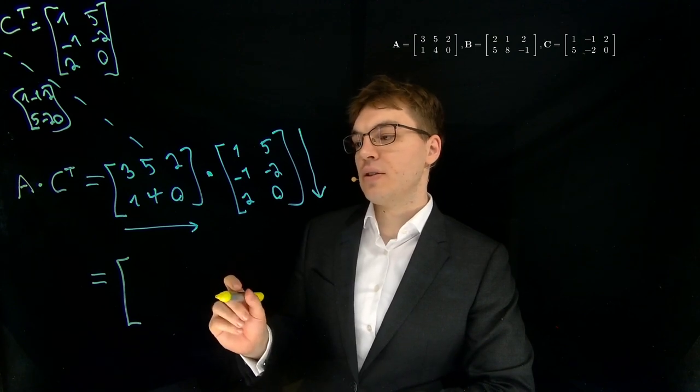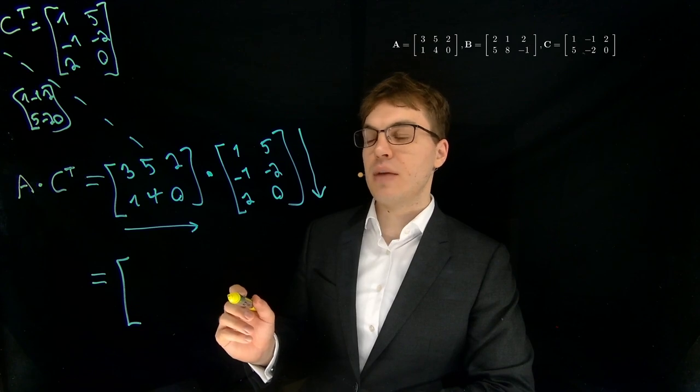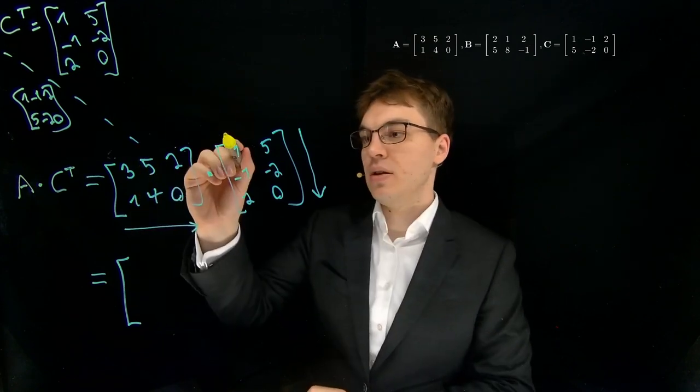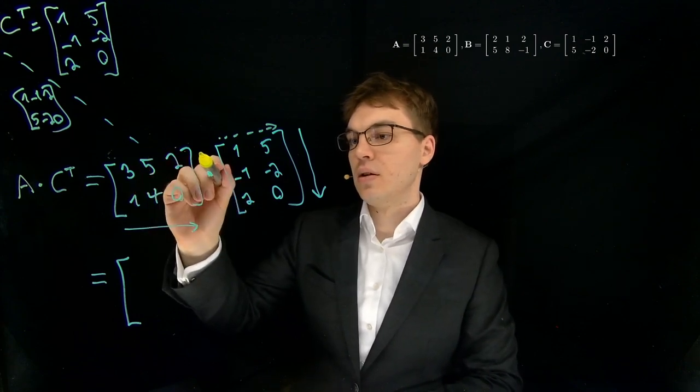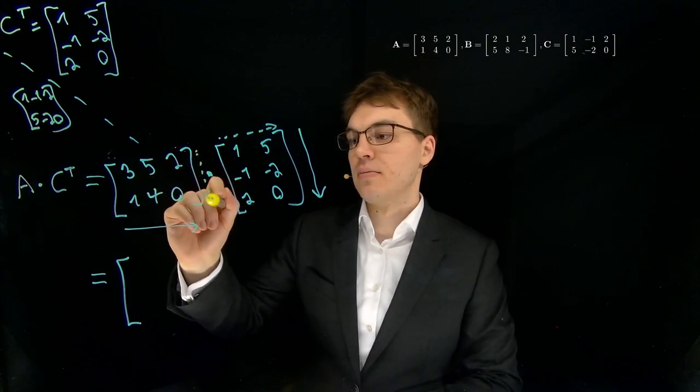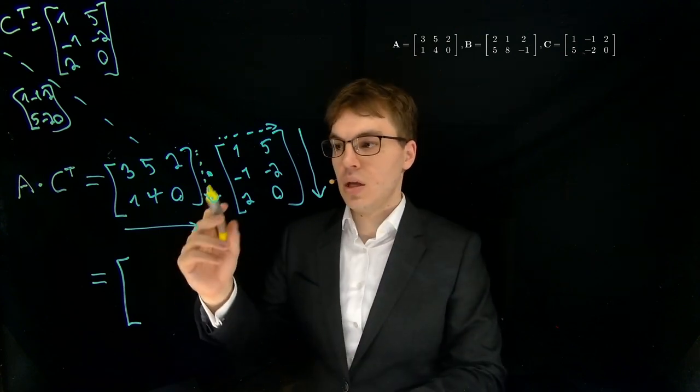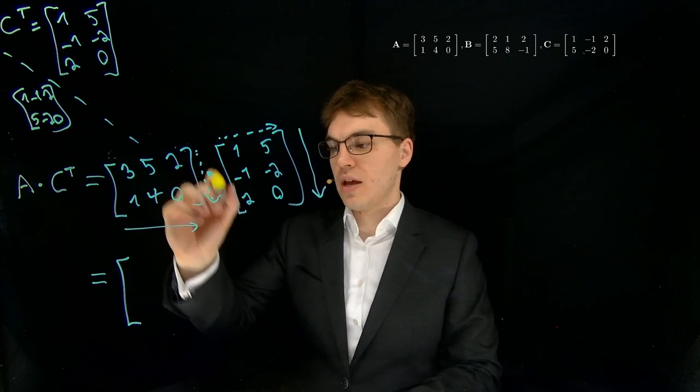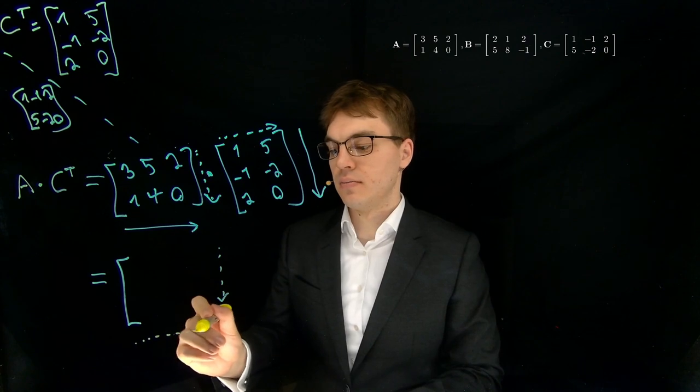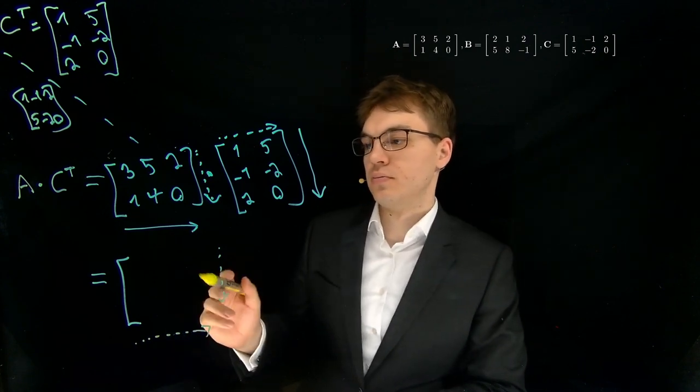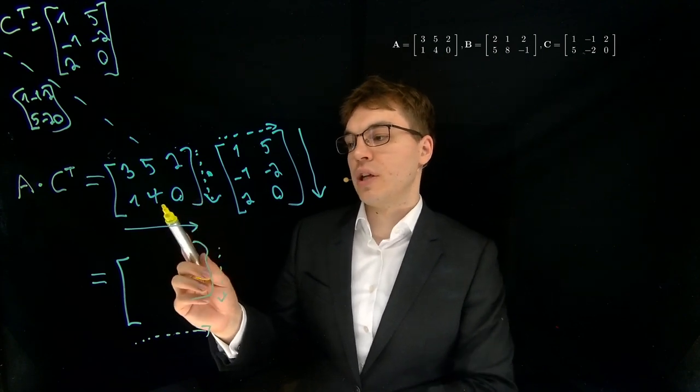And another interesting thing is that we can already predict the shape of the result. Because the result will be this size times this size. So this arrow, we have it here again, and this arrow we have it here again. So two times two.